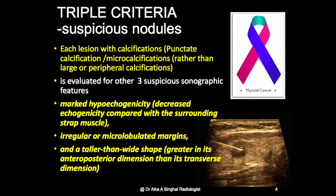For each lesion we look for calcifications, marked hypoechogenicity, irregular microlobulated margin, and taller than wide shape.